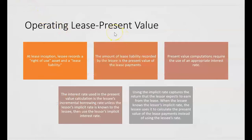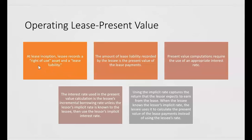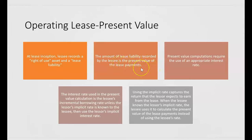What makes this a bit complex is the idea of present value. At lease inception, the lessee records an asset and a liability. The asset is known as a right-of-use asset, because the lessee is only using this asset — not owning it. The asset is owned by the lessor. The amount of lease liability recorded by the lessee is the present value of the many lease payments.